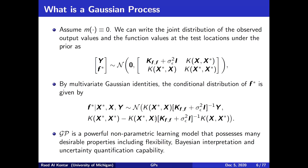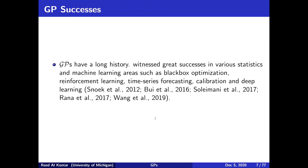Gaussian processes have a long history with many successes in optimization, specifically Bayesian optimization, reinforcement learning — where the best paper at ICML this year uses GPs — time series forecasting, and calibration. Most recently, many deep learning models are essentially just Gaussian processes, specifically in their limit or with few layers. The history of Gaussian processes is very rich, and recently people are uncovering some new value that we have not seen before.